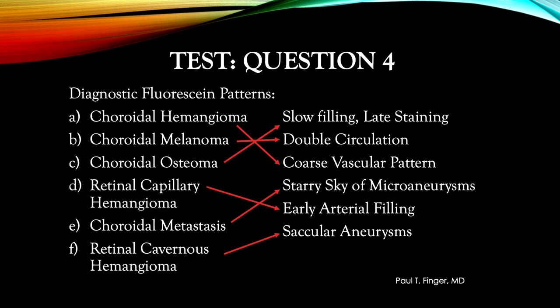Just in case you didn't have that piece of paper, here goes. Choroidal hemangioma is coarse vascular pattern. Choroidal melanoma is double circulation — that was due to those formed tumor blood vessels seen beneath the retinal circulation. Choroidal osteoma is slow filling into that bony tumor, as well as late fluorescein washout, leading to intense late staining.